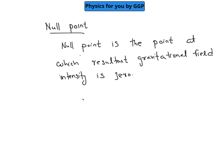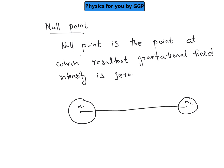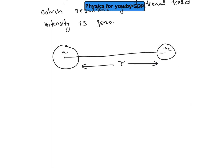Consider an object of mass m1 and another object of mass m2, and these two masses are separated by a distance R. We need to find out where the net gravitational field is equal to zero. In between m1 and m2, assume there is a point P which is at a distance x from m1, or at a distance r minus x from m2, where the net gravitational field is zero.